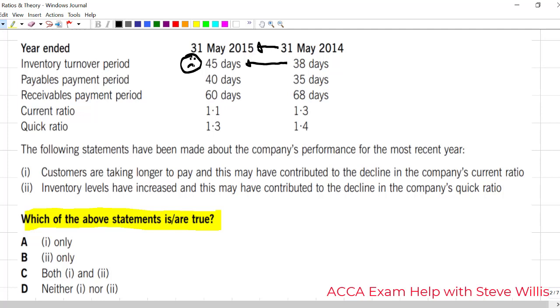Receivables payment period, without any other information, it's taking us longer to pay our suppliers. From a liquidity point of view, we could say that's a good thing. We're keeping cash in our pocket longer. But from a supplier goodwill point of view, it might be harming us, but not important right now. From a liquidity point of view, it's good.